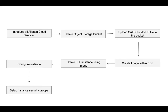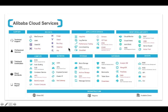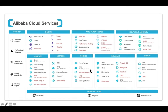Let's begin with the first step — introducing all the Alibaba cloud services. Here is a snapshot of the major services on Alibaba cloud. As you can see, they have a wide range of services: compute, networking, storage, database, DevOps. For our purpose, we just need ECS (Elastic Compute Service) and the Object Storage Service. Those are the only two services we are going to use.